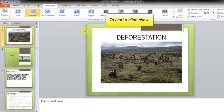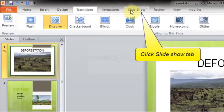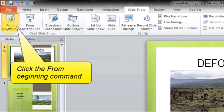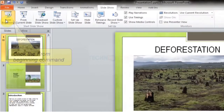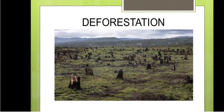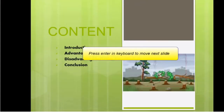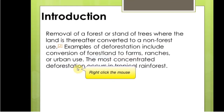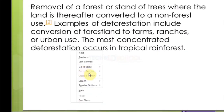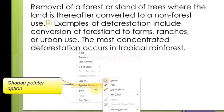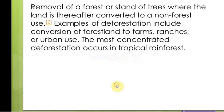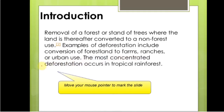To start a slideshow, click the Slideshow tab and then click the From Beginning command. Press Enter on the keyboard to move to the next slide. To access the pen, right-click the mouse, then choose the Pointer Option, then click the Pen option. Now move your mouse pointer to mark the slide.